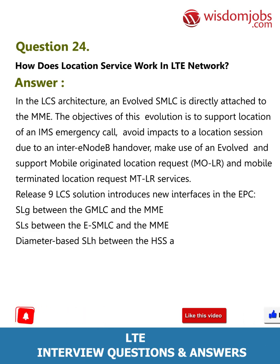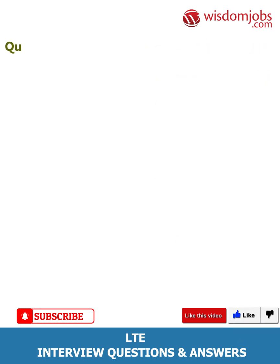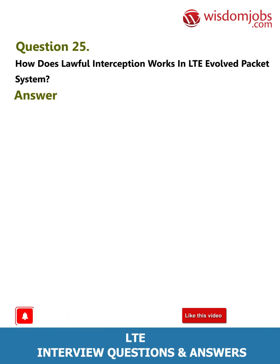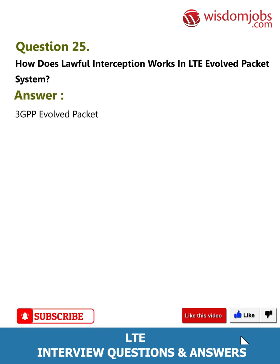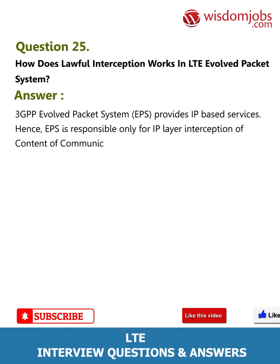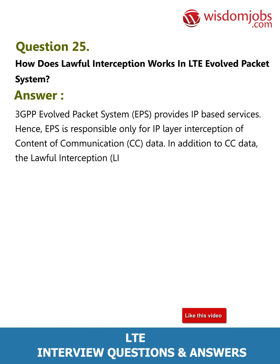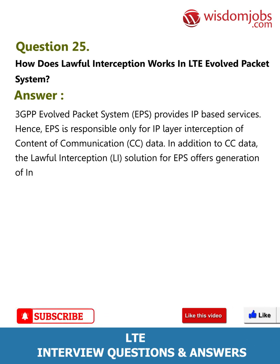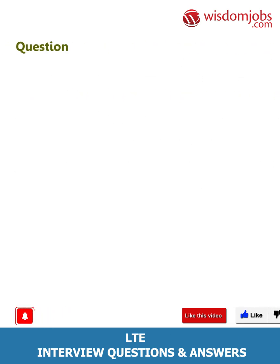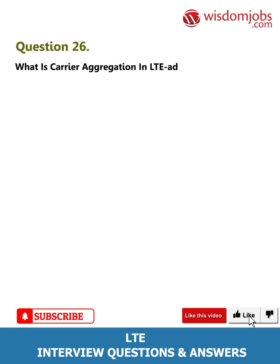Question 25: How does lawful interception work in the LTE Evolved Packet System? Answer: 3GPP Evolved Packet System (EPS) provides IP-based services, hence EPS is responsible only for IP layer interception of Content of Communication (CC) data. In addition to CC data, the lawful interception (LI) solution for EPS offers generation of Intercept Related Information (IRI) records from respective control plane signaling messages as well.